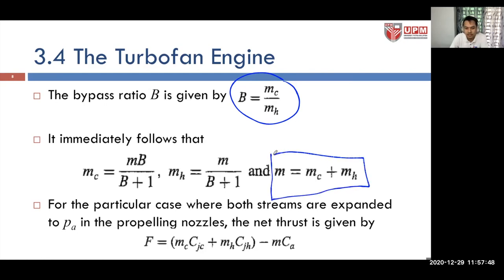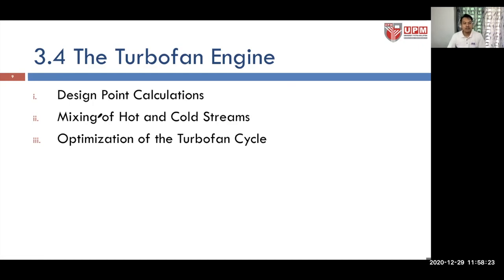For the particular case where both streams are expanded to atmospheric pressure in the propelling nozzle, the net thrust is given by: the mass flow of the cold stream times the cold stream velocity, plus the hot mass flow times the hot stream velocity, minus the total mass flow times the aircraft speed. The subtopics of the turbofan engine include design point calculations, mixing of hot and cold streams, and optimization of the turbofan cycle.